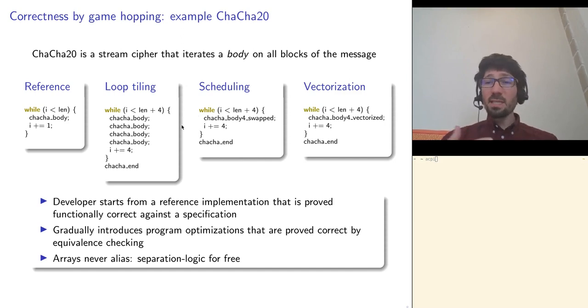Then, in the second hop, we reschedule the instructions of the four copies of the body, to make explicit opportunities for vectorization. This is what we've done in the last hop, when we replace sequences of instructions by single vectorized instructions. In this way, we can split the proof and, for instance, the last part is only concerned by the semantics of vectorized instructions. I would like to mention that some of these proofs, especially here on the scheduling part, are simplified by the fact that in Jasmin, the different arrays can never alias. This provides a kind of separation logic for free.